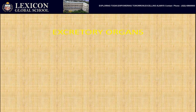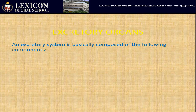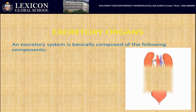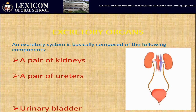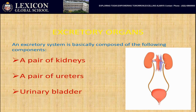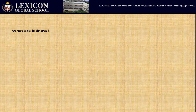What are the important excretory organs? An excretory system is basically composed of the following components: a pair of kidneys, a pair of ureters, a urinary bladder, and the urethra. Let us study each one in detail.